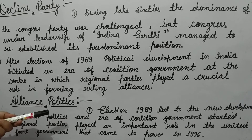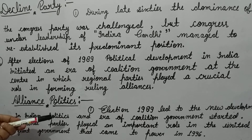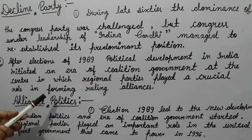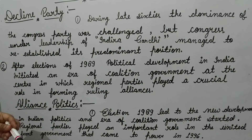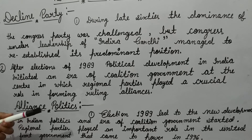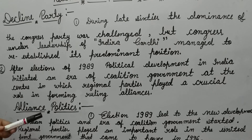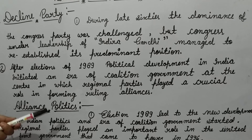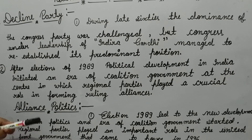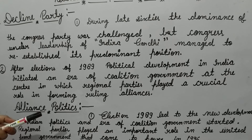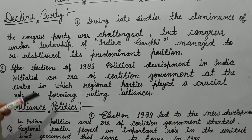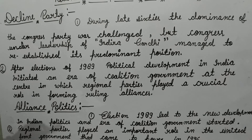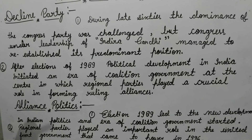The BJP continued to consolidate its position in the elections of 1991 and 1996, and it emerged as the largest party in the 1996 election and was invited to form the government. With the election of 1989, a long phase of coalition politics began in India, and since then there have been 9 governments at the center, all of which have either been coalition governments or minority governments supported by other parties.